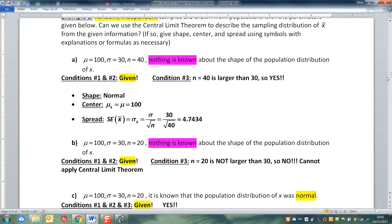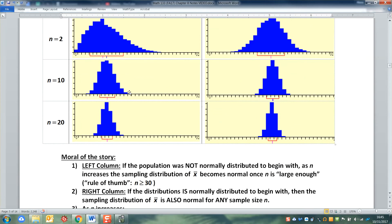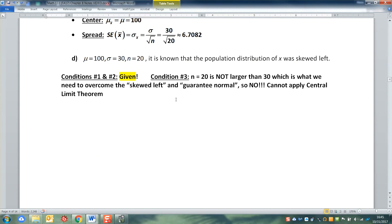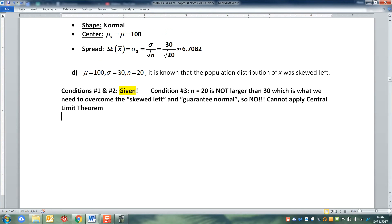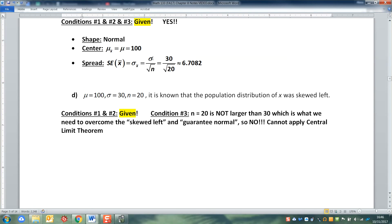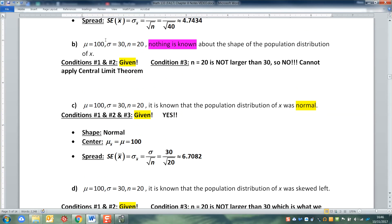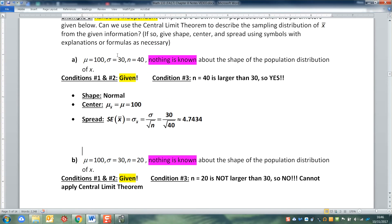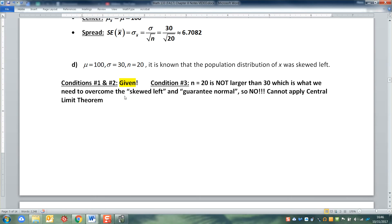And that means we cannot apply the Central Limit Theorem because n = 20 is not larger than 30. It's not enough to overcome the skewing and guarantee normal. I put 'guarantee' in quotes because it's not really always guaranteed for starters. There are some distributions where you could have n = 50 and it's still not normal. Also, by that same token, there are distributions where 20 is fine. You saw one right up here. n = 20 was really normal, very close to normal, normal enough. Let's put it that way. So we need n = 30 to guarantee though, and we don't have it. So we're done. There's nothing more we can do. We cannot apply the Central Limit Theorem. We cannot discuss the shape, the center, and the spread.